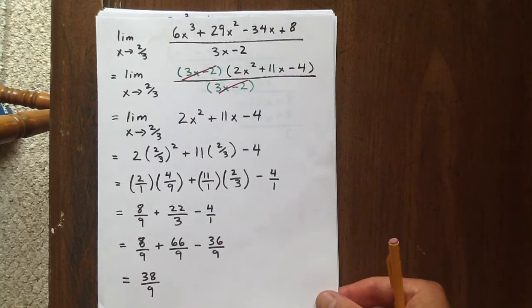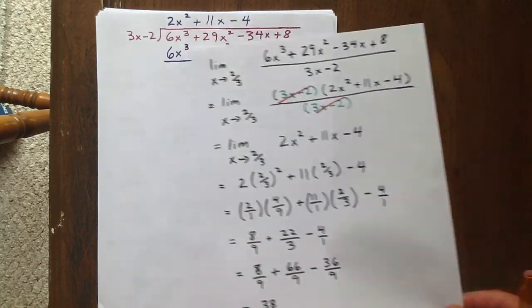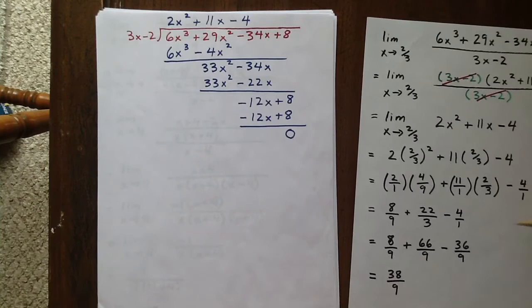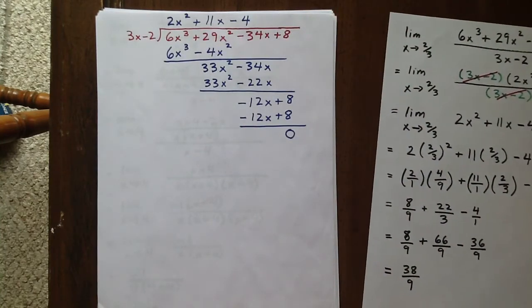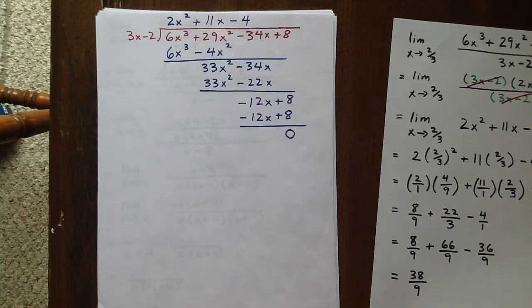So we want to factor that cubic. We're probably going to have to use long division. Doing that gives a second factor in the numerator of 2x squared plus 11x minus four.